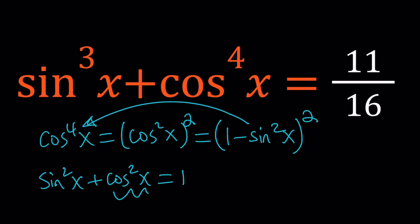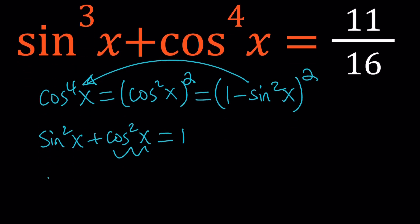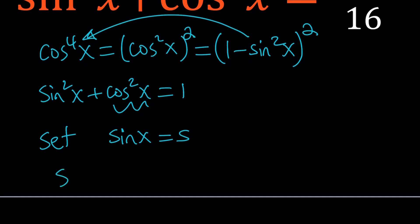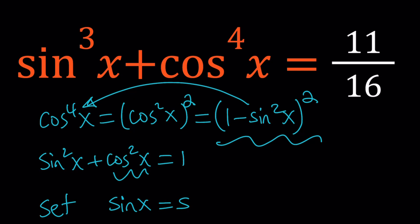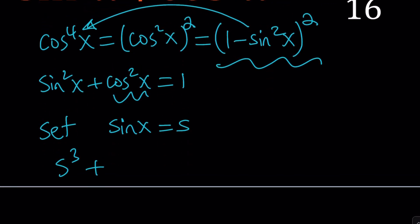For simplicity, let's set sine x equal to s. A lot of times with identities and equations I do this — set sine x equal to s and cosine x equal to c to make the writing easier. So we get s cubed plus (1 minus s squared) squared equals 11 over 16.